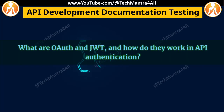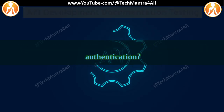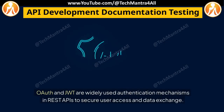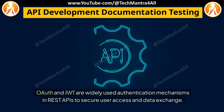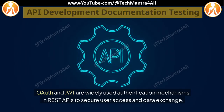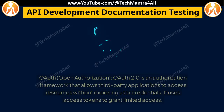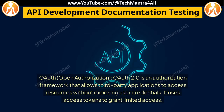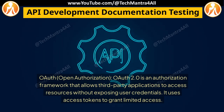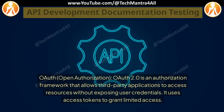What are OAuth and JWT, and how do they work in API authentication? OAuth and JWT are widely used authentication mechanisms in REST APIs to secure user access and data exchange. OAuth, or Open Authorization, is an authorization framework that allows third-party applications to access resources without exposing user credentials. It uses access tokens to grant limited access.